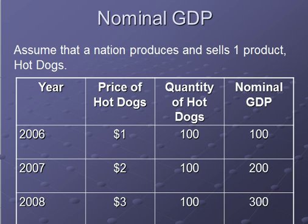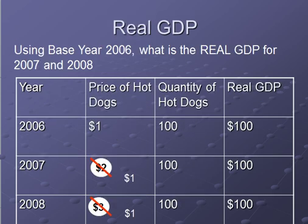Now let's look at real GDP, taking inflation into account by using base year prices. If our base year is 2006, we take the 2006 price for hot dogs and apply it to all other years we're calculating. Now we can focus on quantity to determine GDP. Looking across all three years, it's $1 times 100 for each year, so our GDP is the same — it hasn't increased or decreased. Versus nominal GDP, where we would have thought GDP went from $100 to $300, real GDP shows the economy's production stayed the same.